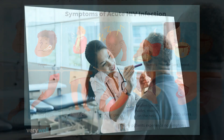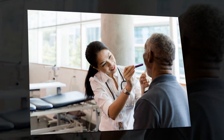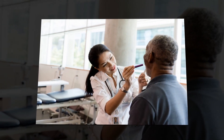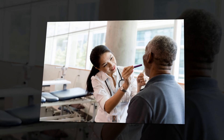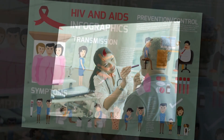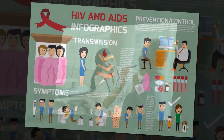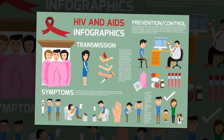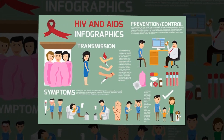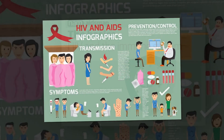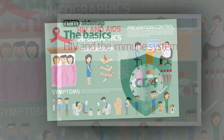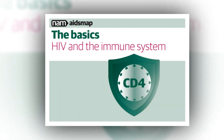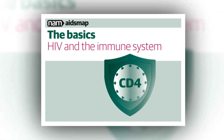Oral warts show up in the mouth as small, raised areas of skin tissue that often have a cauliflower-like appearance. These lesions appear inside the lips and under the tongue. Some researchers believe that cases might be due to the body's initial response to a new HIV treatment regimen, said Pinto.